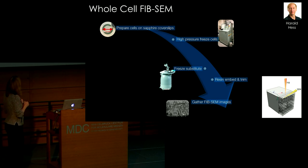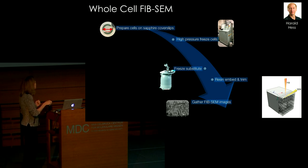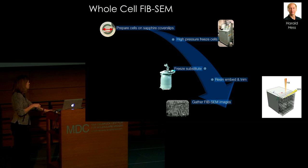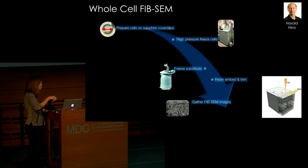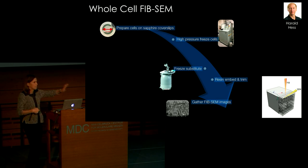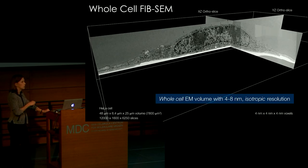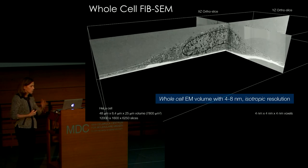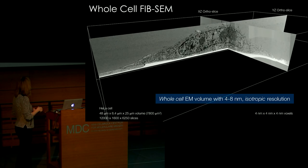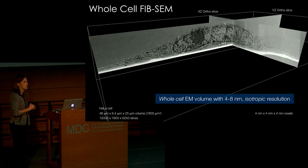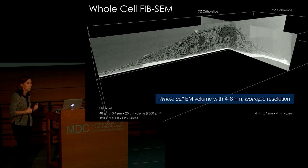Basically, we take cells on sapphire cover slips, high-pressure freeze them, freeze-substitute, resin embed, and then the cell is sitting in a block. You do scanning electron microscopy across the surface, then use a focused ion beam to shave off four-nanometer slices at a time, then do another scanning EM. You repeat this thousands of times to gather a whole dataset through the cell. This is a HeLa cell where we've scanned through four nanometers at a time—giving us four-nanometer voxels through an entire HeLa cell. It took two weeks to collect this data.